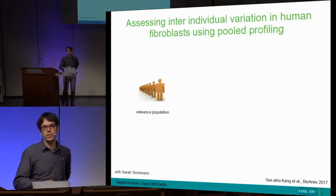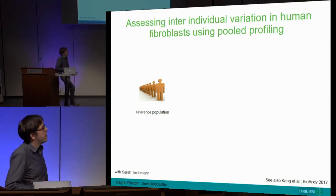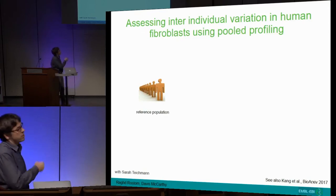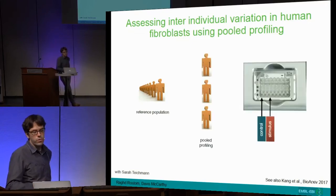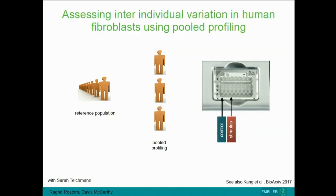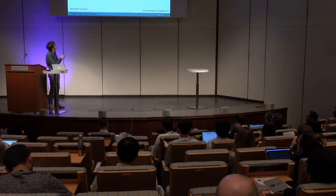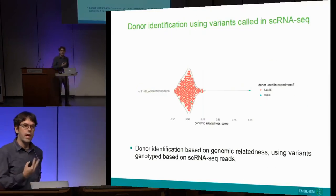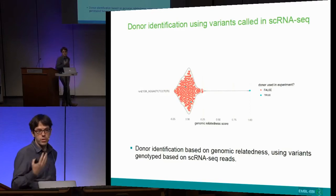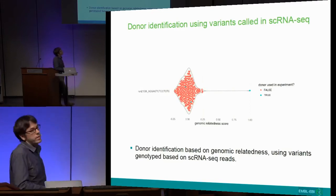I want to briefly show one example of how we addressed this - work with Sarah's lab where we looked at reference populations of individuals whose genotypes we know. We want to understand what is the variation between people. We did a simple proof-of-concept experiment: we took three individuals whose genotypes we know, pooled them, and profiled fibroblast cells from all these individuals in two conditions - control and stimulus - on a standard 10x run. The question is: how do you identify which cell comes from which individual? The approach uses the relatedness of these individuals - combining genetic principles and computational methods with experimental designs.